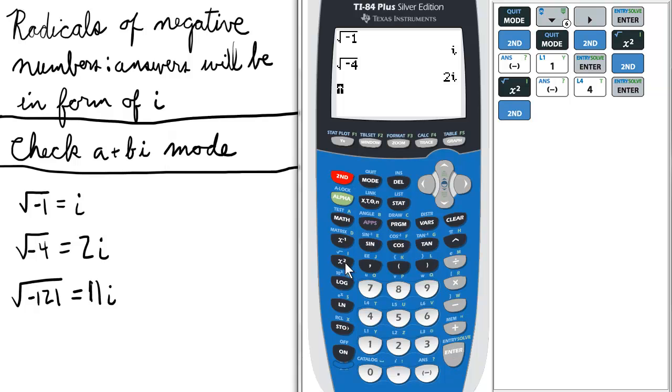Lastly, if we take the square root of negative 121, it gives us the answer 11i.